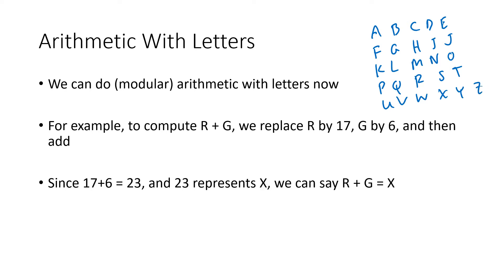The numbers I'm starting with: A is 0, then 1, 2, 3, 4, F is 5, all the way up to K being 10, P being 15, U being 20, and Z being 25. I kind of like to group it by fives just because counting by fives isn't too bad.